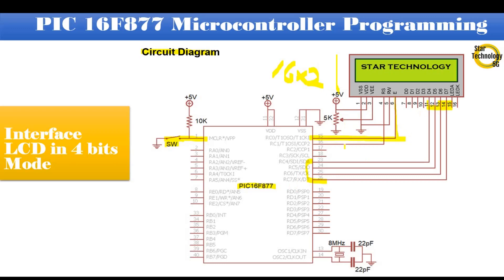Pin RC0 is interfaced with the EN pin. Pin RC1 is interfaced with the RS pin. Pin RW is connected with ground because we are not reading any data from LCD. Pin VSS is connected with ground. Pin VDD is connected with positive 5 volts. Contrast pin VEE is connected with a variable resistor of 5 kilohms. Pin numbers 13 and 14 interface with an 8 MHz crystal with 22 pF capacitors. Pin numbers 11 and 32 are connected with positive 5 volts, and pin numbers 12 and 31 are connected with ground.